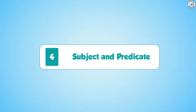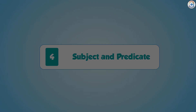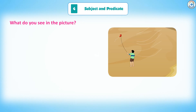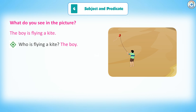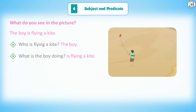Chapter 4: Subject and Predicate. What do you see in the picture? The boy is flying a kite. Who is flying a kite? The boy. What is the boy doing? Is flying a kite.